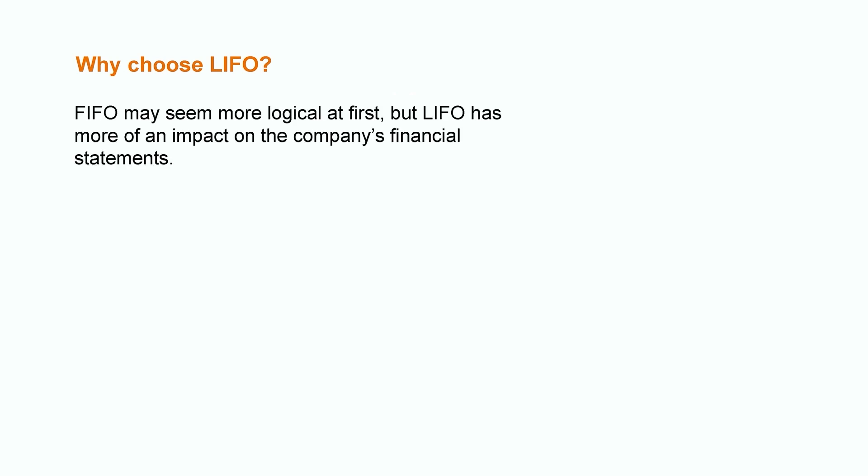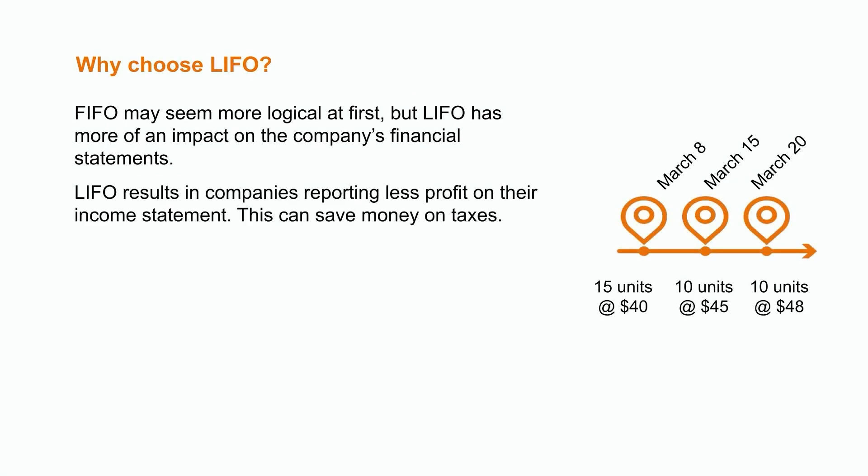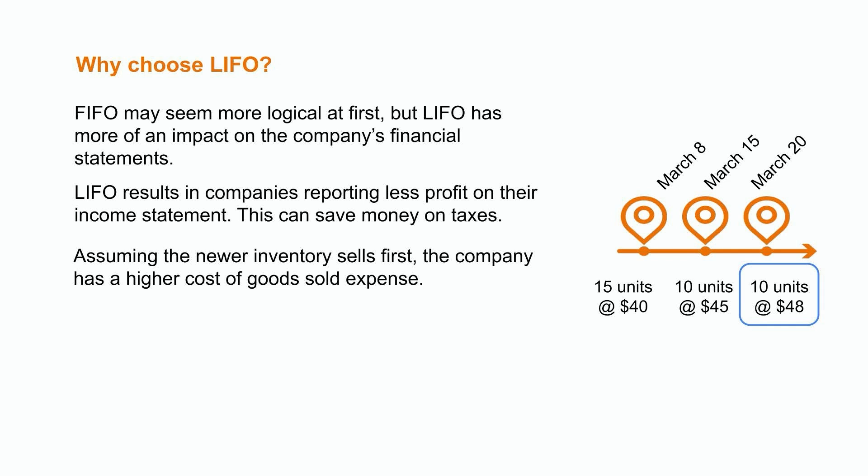So why would a company choose to use LIFO if they're usually selling their older items first? Wouldn't it make more sense for them to use FIFO? This is likely because choosing to use LIFO will have an impact on the company's financial statements. LIFO generally results in companies reporting less profit on their income statement. But why would companies want to show less profit? Well, this is because it may save them money on their income taxes. LIFO became popular due to inflation and the fact that income tax rules in some countries allow companies to use this method. By assuming the more recent, higher-priced inventory is being sold first, a company records a higher cost of goods sold expense, which decreases profit and can reduce the amount of income taxes the company has to pay.